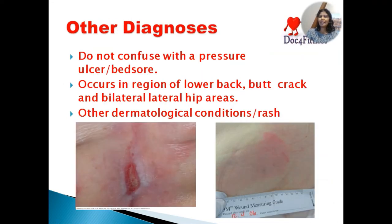Now, what are some other things that mimic diaper rash? Stage 1 pressure ulcers or bed sores can also mimic diaper rash. People who get diaper rash are also the exact same population at risk of getting bed sores — they're elderly, they're lying around, and they have decreased mobility. Stage 1 pressure ulcer, shown in the second picture here, looks just like a diaper rash.